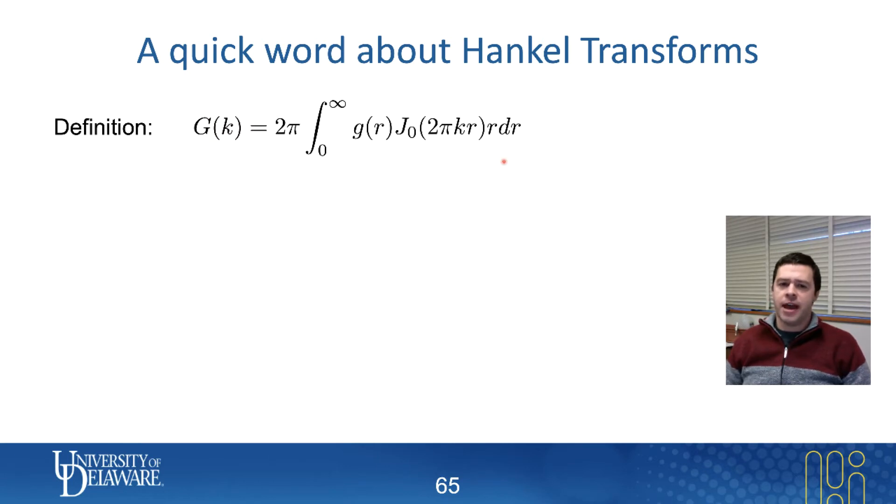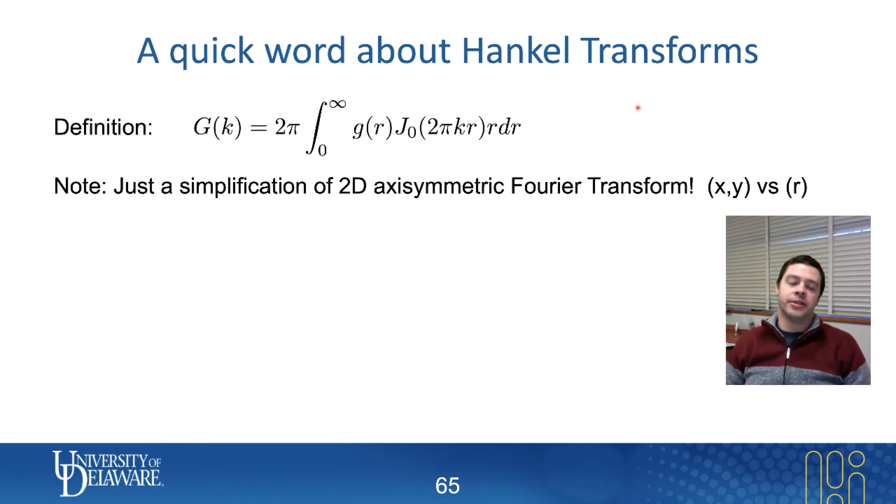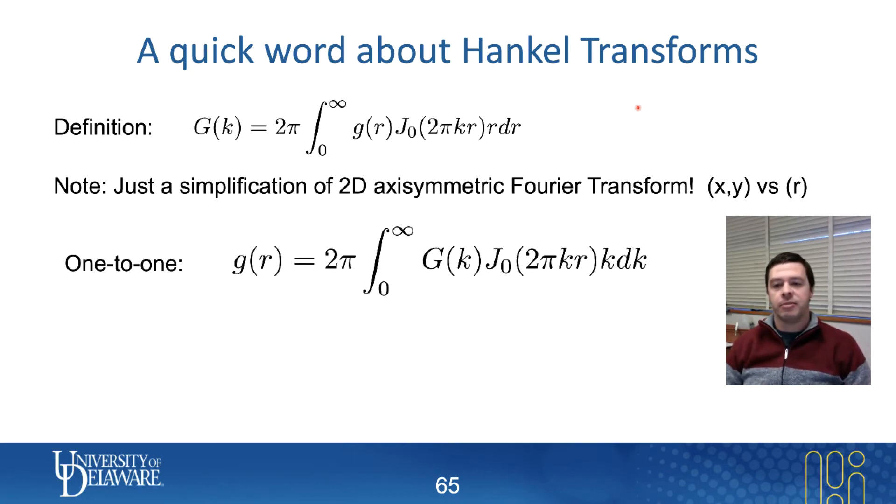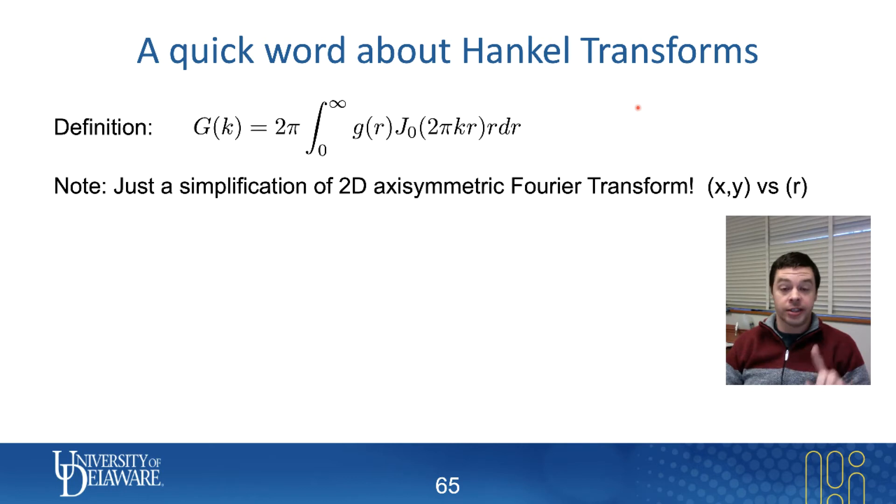Now, it turns out that that particular setup is not chosen randomly. It turns out that if you're trying to do a Fourier transform of two variables, but the function that you're trying to do the Fourier transform on is axisymmetric, so it's a function of R and not really X and Y separately, then the definition that I've given you up there is exactly equivalent. If you're curious about all this, you can go see it on like Wolfram. I think Wolfram's website talks about Hankel transforms and can explain why it has this definition. But the key thing is that it is a Fourier transform.